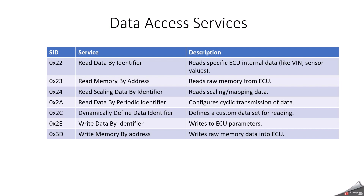Service 0x23 is Read Memory By Address — it reads raw memory from the ECU. Service 0x24 is Read Scaling Data By Identifier, which reads scaling or mapping data. Service 0x2A is Read Data By Periodic Identifier, which configures cyclic transmission of data. Service 0x2C is Dynamically Define Data Identifier, which defines a custom data set for reading. Service 0x2E is Write Data By Identifier — whenever you want to write data from a tester to the ECU, use 0x2E. And service 0x3D is Write Memory By Address, which writes raw memory data into the ECU.